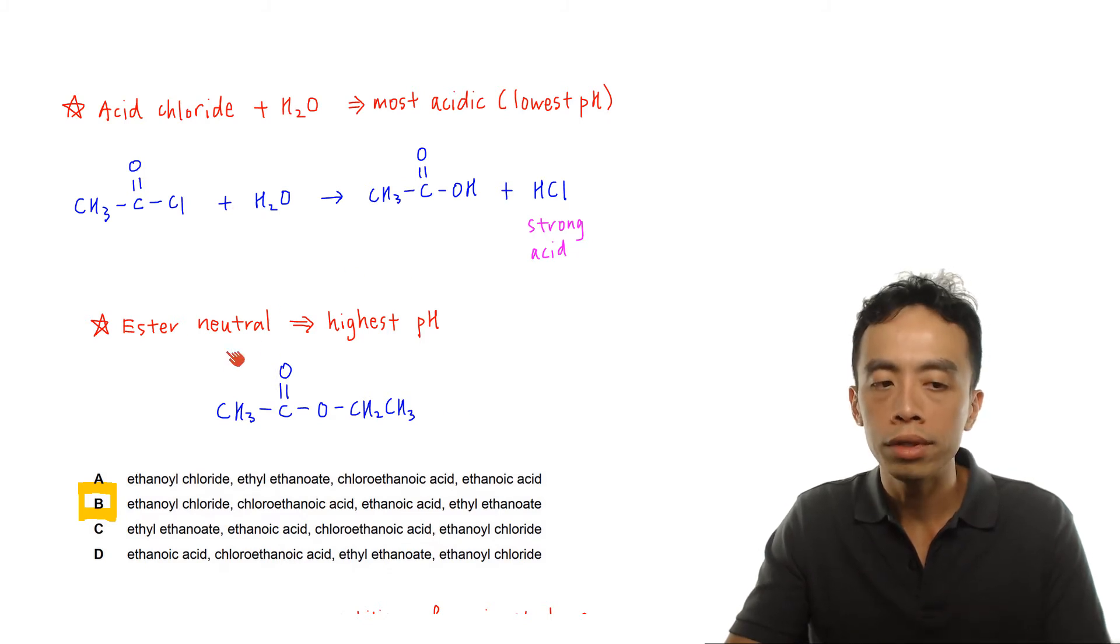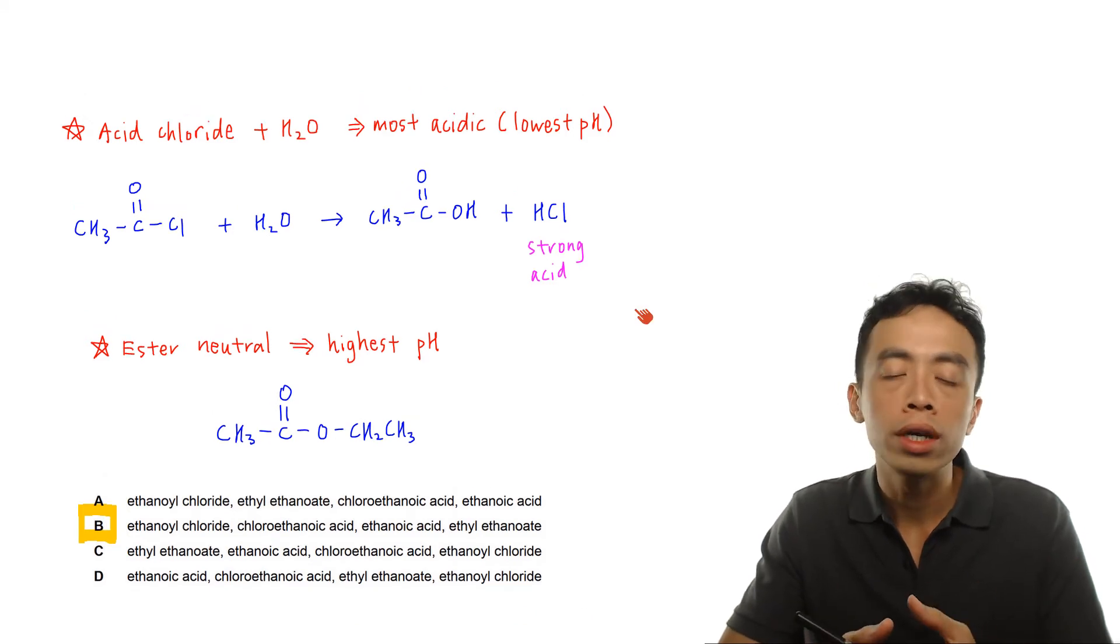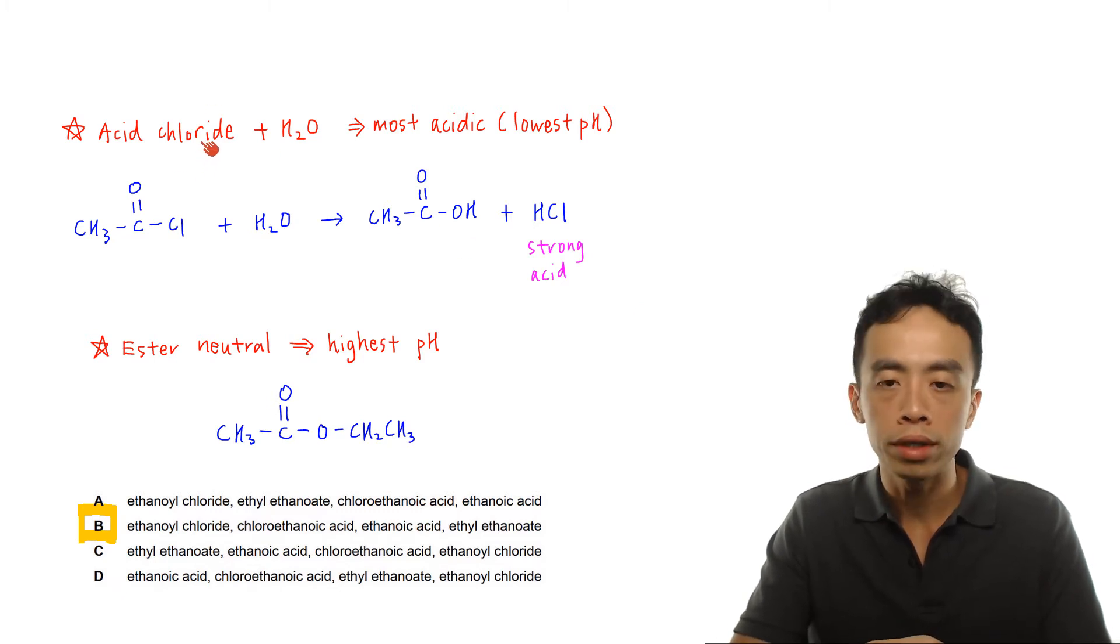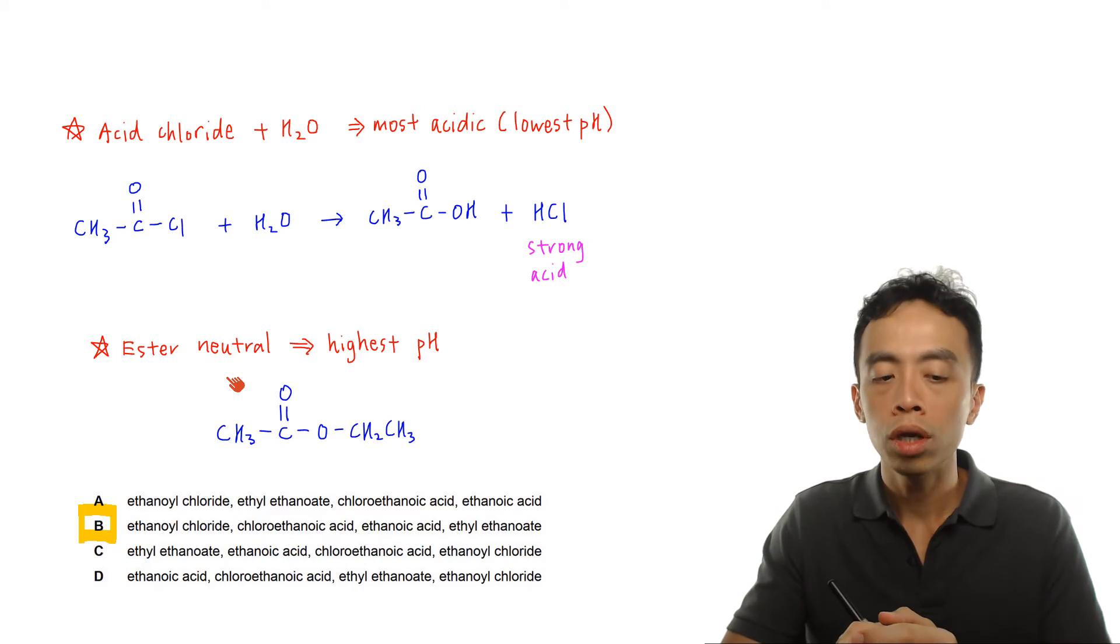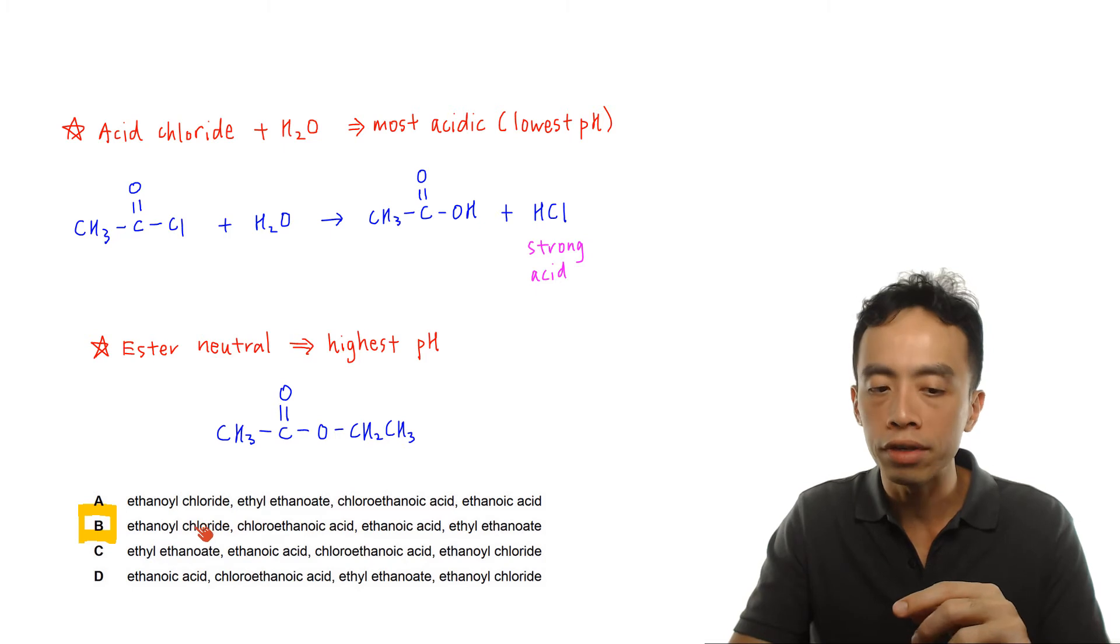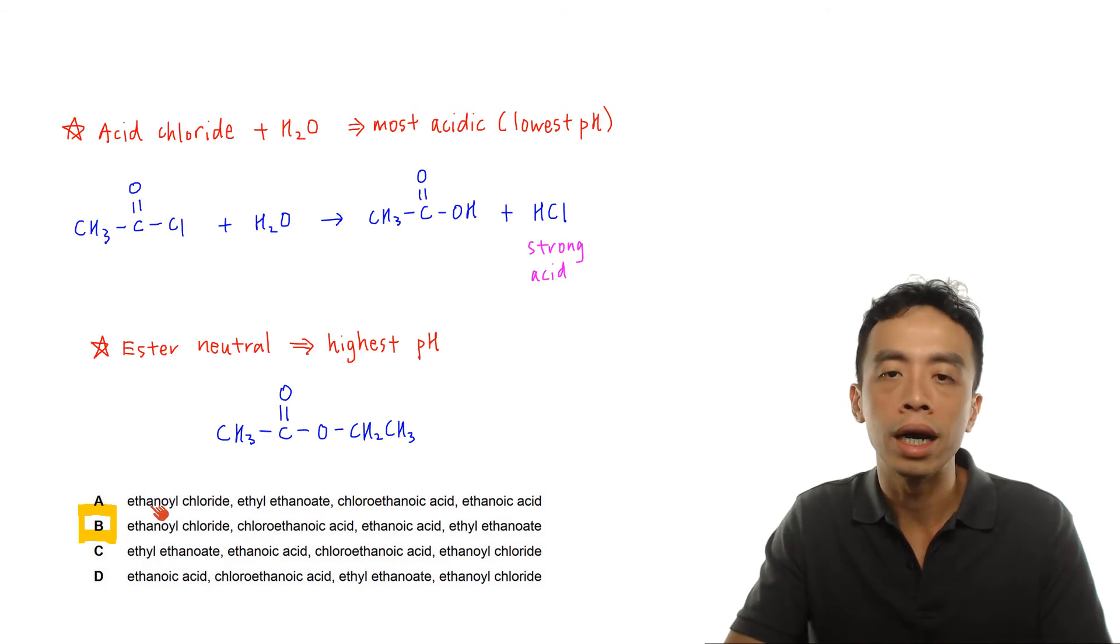Since esters are neutral, it should have the highest pH. Just by looking at these two outcomes we can determine the answer already. Acid chloride should be the most acidic with the lowest pH, and ester is the least acidic, in fact neutral, with the highest pH. When we look at all four options, we only have one instance where acid chloride is on the left and ester is on the right, so option B must be the answer.